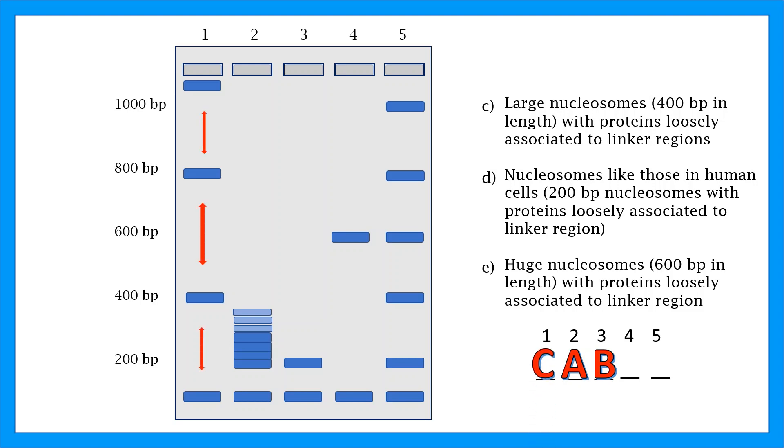For D. Nucleosomes like those in human cells, 200 base pair nucleosomes with proteins loosely associated to linker region. In row 5, we see that each nucleosome is 200 base pairs, and there are proteins loosely associated to linker region. That's why this one must be the correct answer.